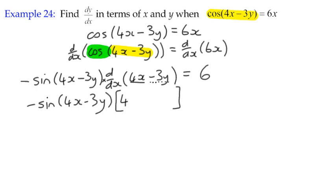And then we've got negative 3y. Differentiating in terms of x becomes negative 3, that's differentiating the expression, multiplied by dy by dx because it's a y term, equals 6.